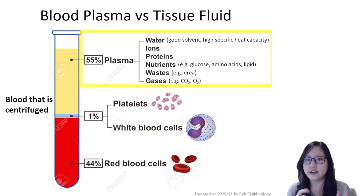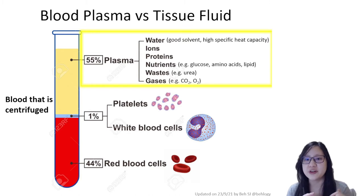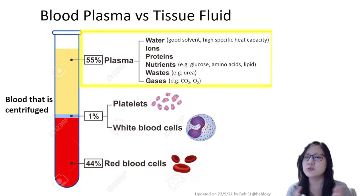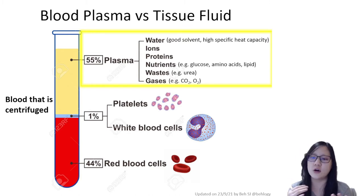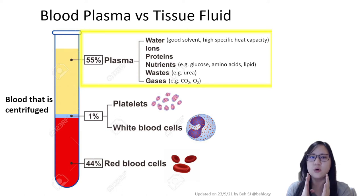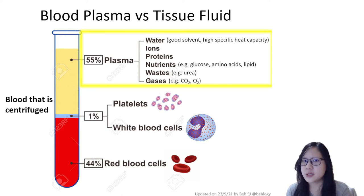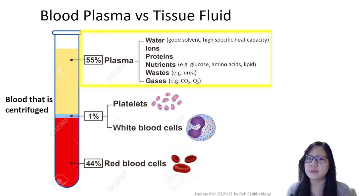You know about water already — it's covered in Chapter 2, you can go and refer to that. But yes, that's plasma: mostly water and all those other things. Now that's blood plasma, so what exactly is tissue fluid?